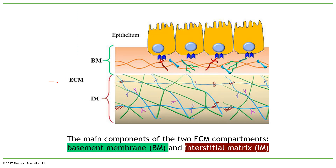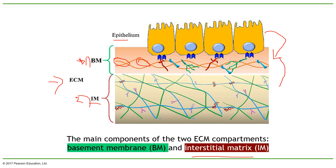We're going to talk about the extracellular membrane, which is a very important component of any tissue. Underneath the epithelia, for example, you will find two components of the extracellular membrane. The first is the basal membrane — a thin layer of proteins that separates the epithelia. The second component is the interstitial matrix. Both are part of the extracellular membrane and serve as support structures.